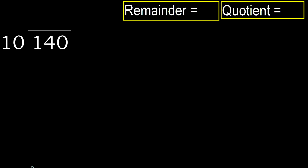140 divided by 10. 1 is less, therefore next. 14 is not less, therefore work with 14. 10 multiplied by which number is nearest to 14, but not greater?